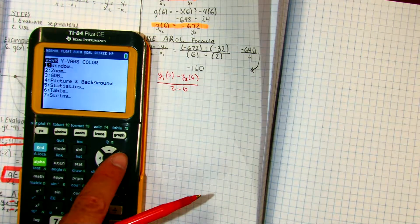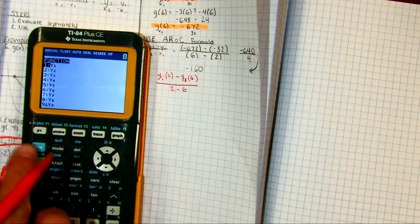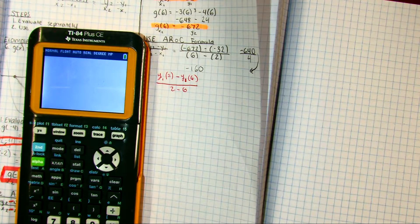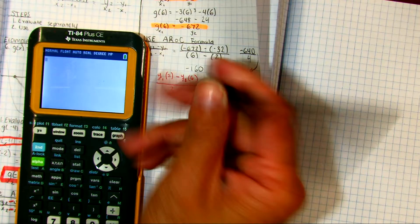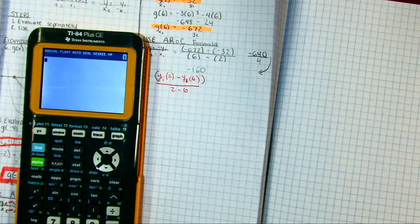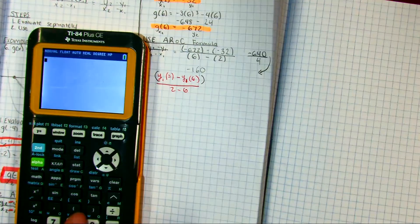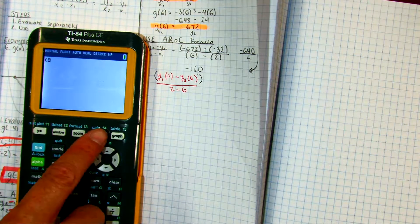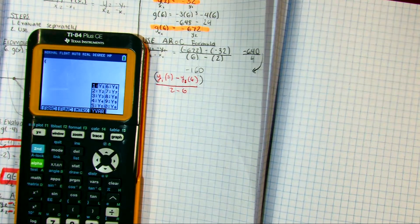VARS, YVARS, function. Do you guys remember the easier way I told you? What's the easier way? Parenthesis, alpha, trace, and there's your Y1 value.